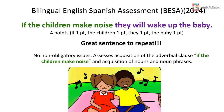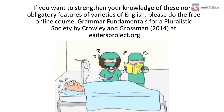Another example: 'If the children make noise, they will wake up the baby' — a four-point sentence. One point for 'if,' which introduces the conditional adverbial clause. The remaining points go to simple nouns and noun phrases. I'd like to see more sentences like that. If you want to strengthen your knowledge of these non-obligatory features of different varieties of English, please visit the free online course Grammar Fundamentals for a Pluralistic Society, written with co-author Chad Grossman, available at leadersproject.org.